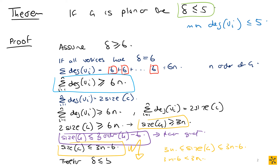Therefore, delta must be less than or equal to five, and the proof is complete. To recap: the theorem states if G is planar then delta ≤ 5. We proved it indirectly by assuming delta ≥ 6, then considering the minimum case where all vertex degrees equal six, giving sum of degrees = 6n, so the general case has sum of degrees ≥ 6n.